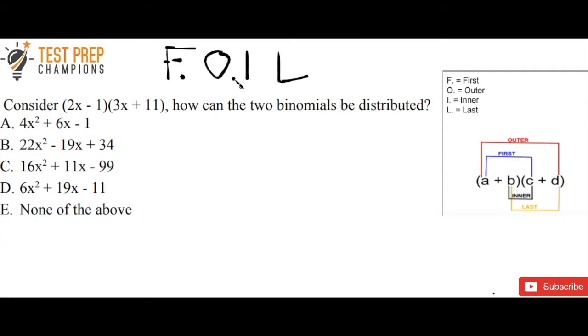So F is for First, O is for Outer, we got Inner and we got Last. And so essentially what you're going to do for Outer is you take the first number and you're going to multiply that by the outer number. You can see kind of a little map over here where you've got outer in red, first in blue, and we have yellow is the last and then inner is in black.